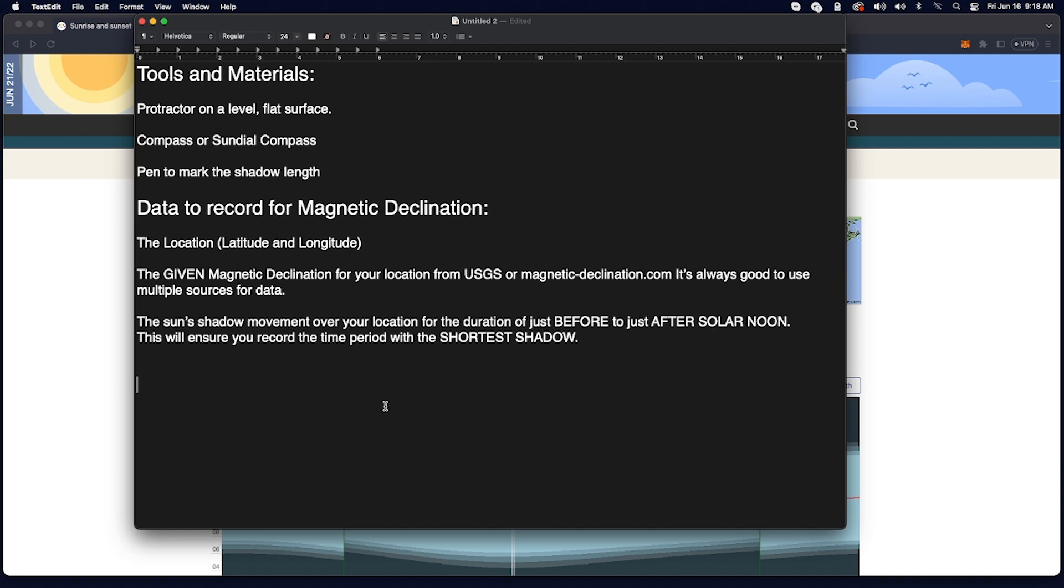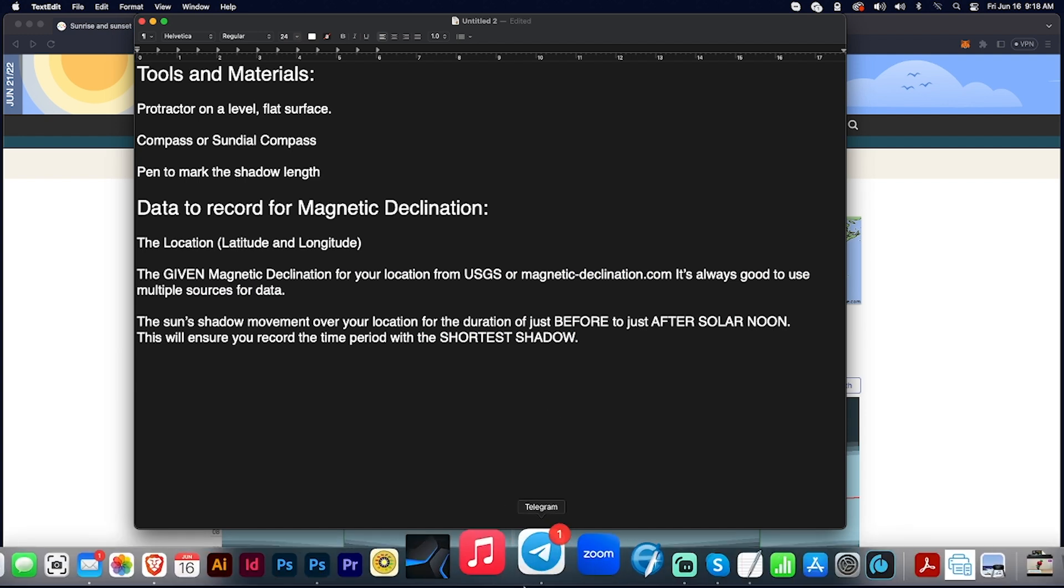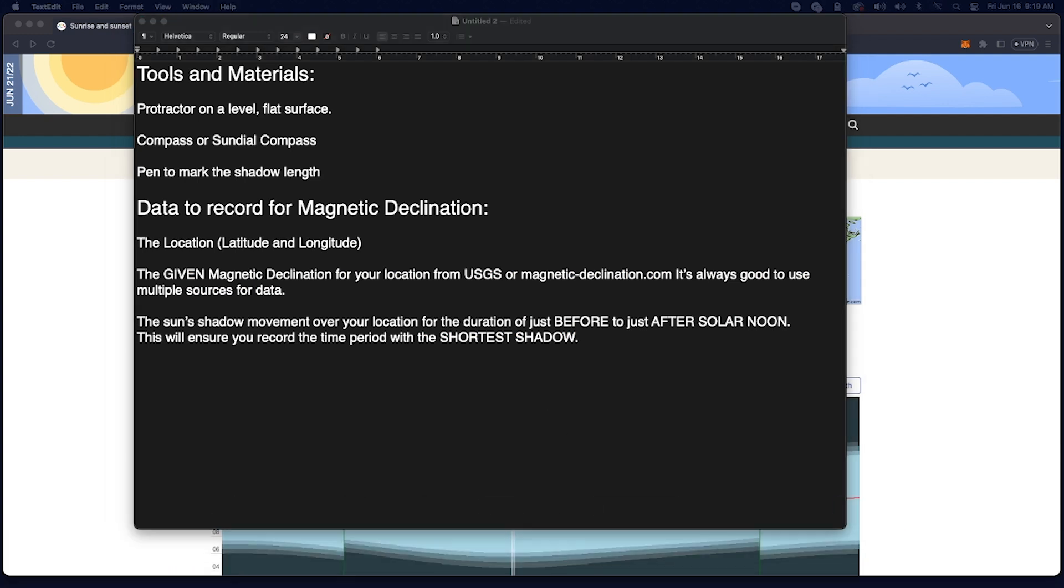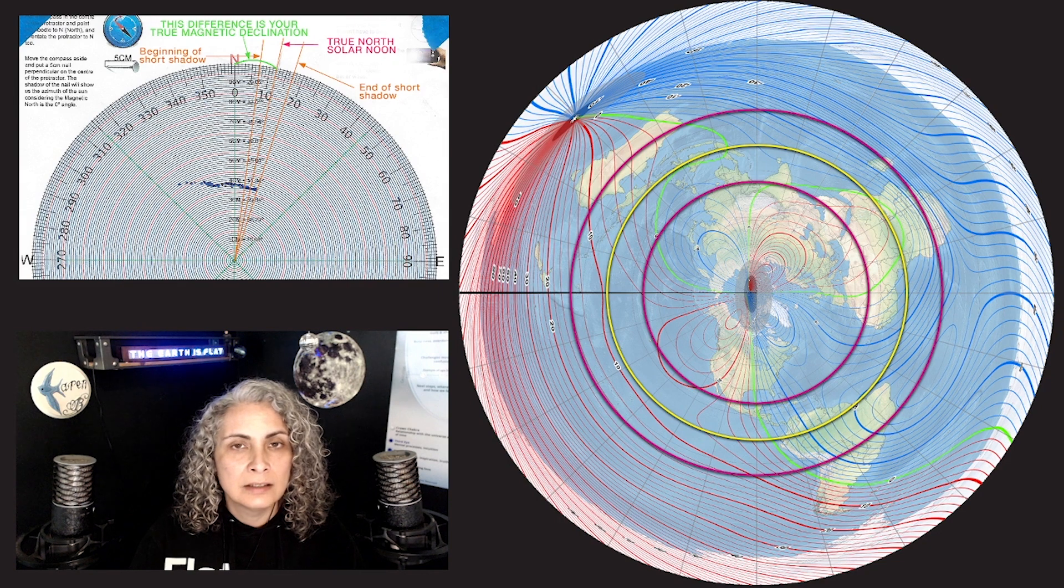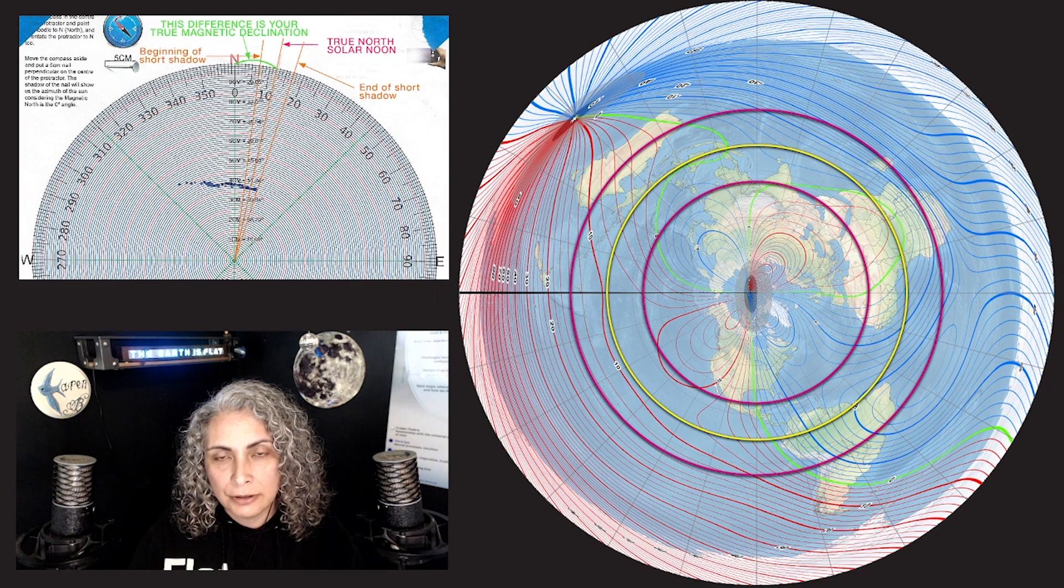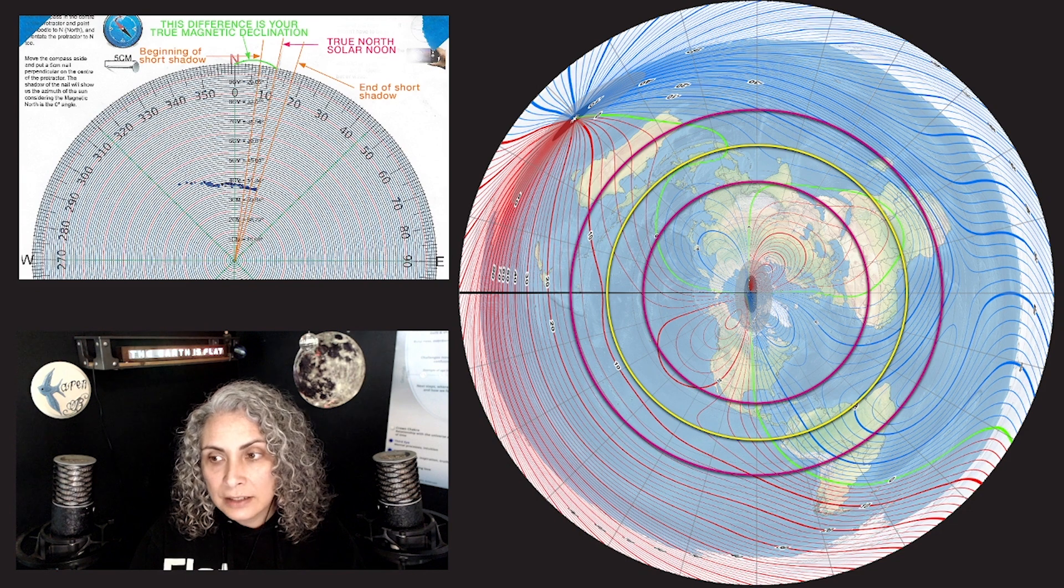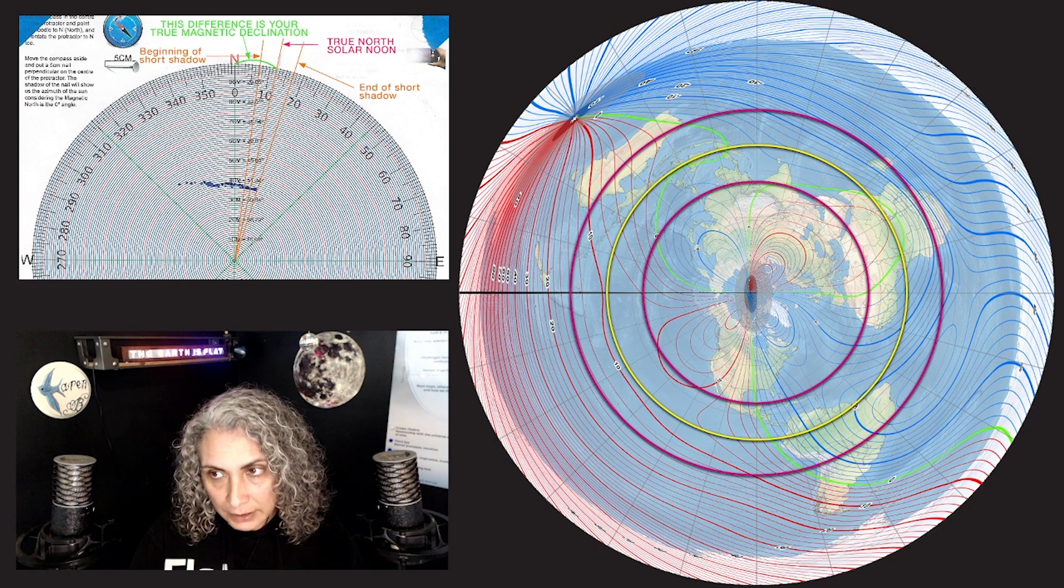Tools and materials you'll need: the protractor on a level flat surface, a compass or a sundial compass, a pen to mark the shadow length, and then of course all this data. From there, we can take that data that we gather and we can then test it against what they give us. We can see if what they're giving us is accurate information, or possibly, if we get enough people doing this from different points around the plane, then we can maybe perhaps uncover some sort of pattern of discrepancy.